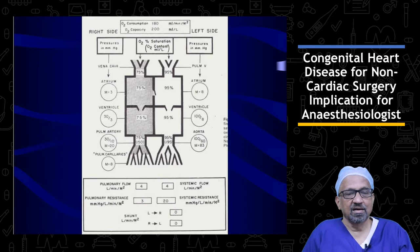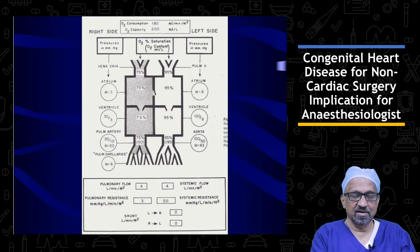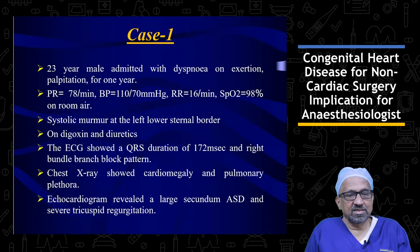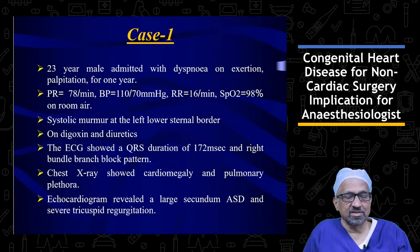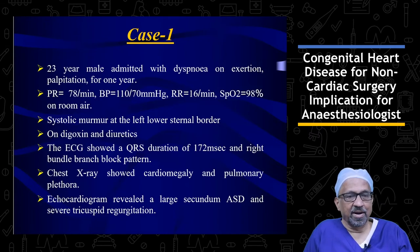Let us take a case-based discussion of this topic. The first case is a 20-year-old male admitted with dyspnea on exertion and palpitations for one year. Pulse rate, blood pressure, respiratory rate, and saturation are normal. But on examination, there is a systolic murmur at the left lower sternal border and fixed splitting of the second heart sound.